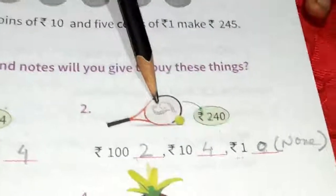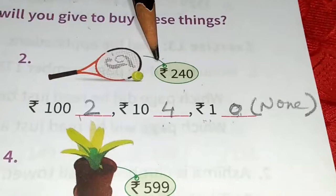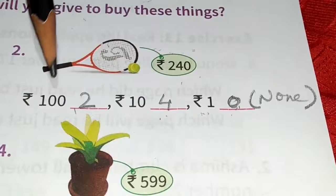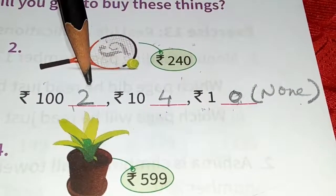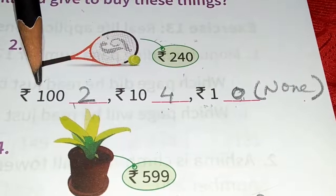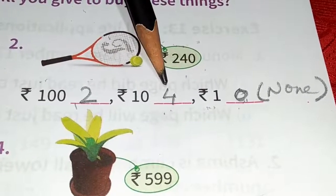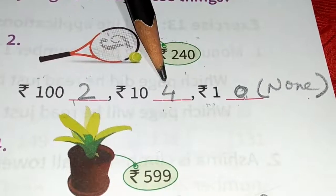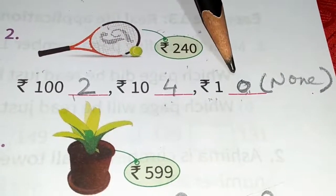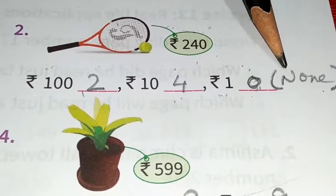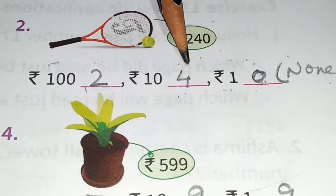Next, number 2: this badminton costs rupees 240. How many 100 rupee notes will you give? 2 — that makes 200. In the 10th place we have 4, so 4 ten-rupee notes — that makes 40. In the 1st place we have 0, so you don't have to give any 1 rupee coin. So, you will give only 2 hundred-rupee notes and 4 ten-rupee notes to the shopkeeper.